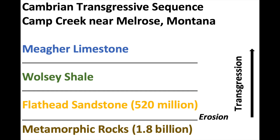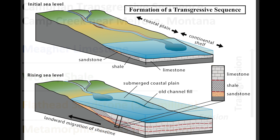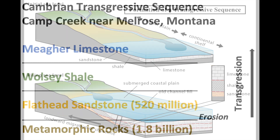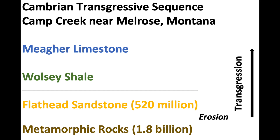To wrap it all up: the Great Unconformity represents a period of time when plates collided, uplifting huge mountains that rival the modern Himalayas. Over the following billion years, those mountains were eroded down to sea level, and when sea level rose, it deposited beach sands of the Flathead Formation over that eroded surface — that's the Great Unconformity. With continued sea level rise, the beach sands were eventually overlaid by offshore shelf muds of the Wolsey Formation. And eventually, as the shoreline moved inland to the east, it was overlain by the Mar Limestone, forming the transgressive sequence of the Cambrian.